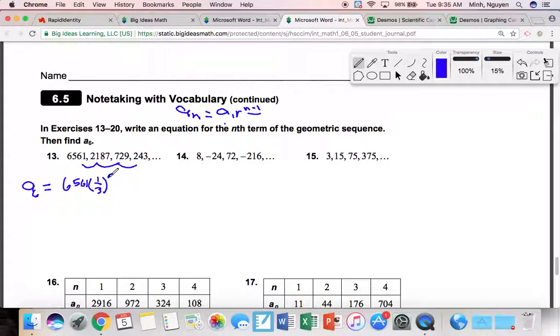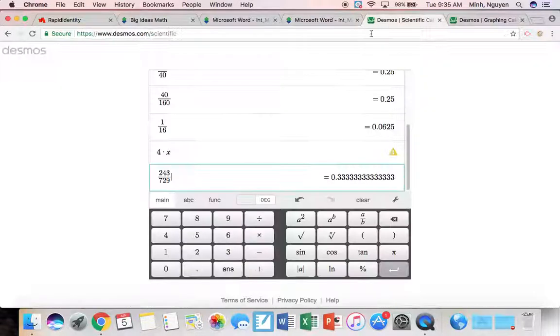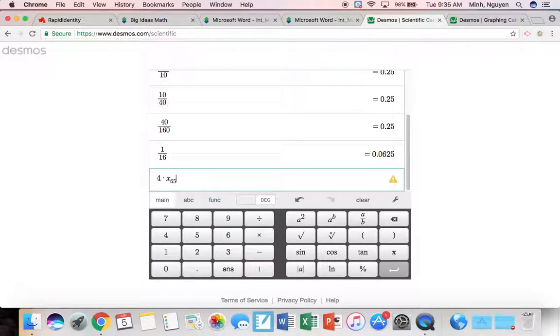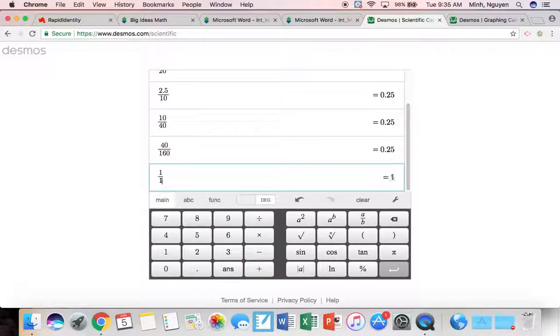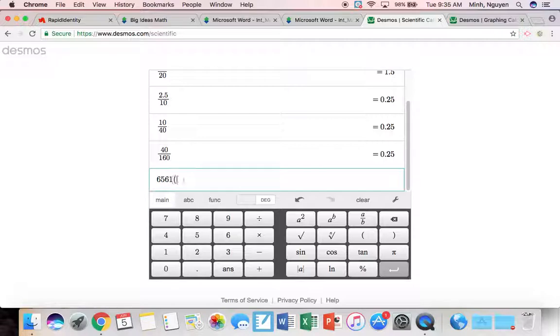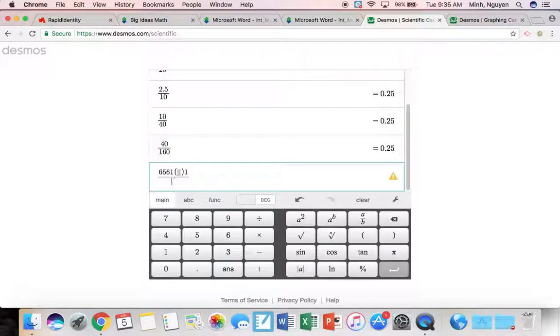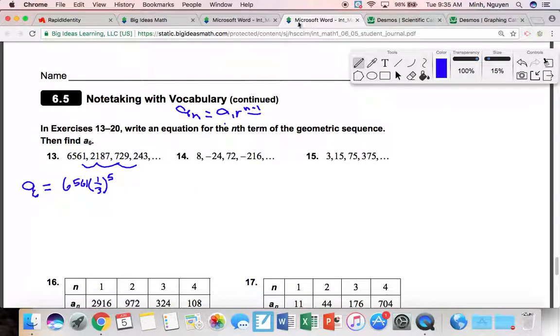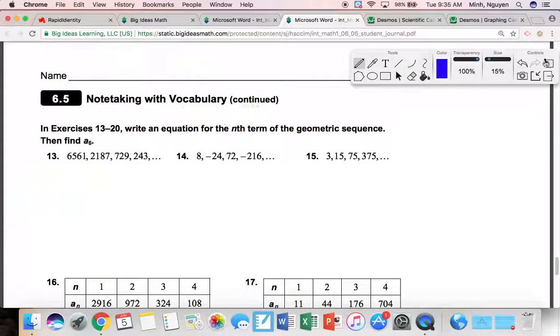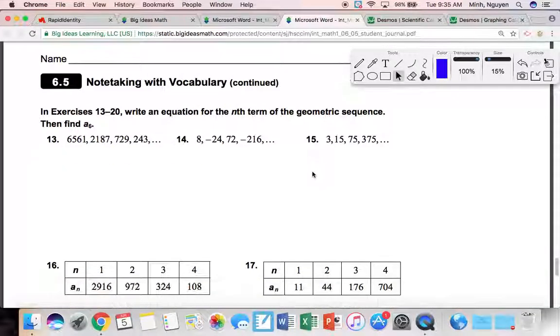So I could say 6561 times 1 divided by 3 to the 5th power, which equals 27. There it is. That's it. Use a calculator. Calculator's your best friend. Write out the formula, though.